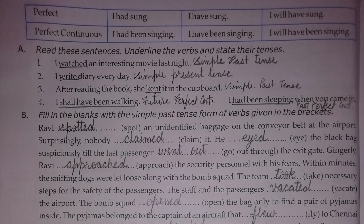Now come to the exercise: read these sentences, underline the verbs, and state their tense. Tense is the topic — you have to tell what kind of tense each sentence belongs to. For example, simple past tense will go in the second; simple present tense will go in the third. If 'shall have been walking' is given, then since it has will/shall, plus have for perfect, plus been, plus V1 plus ing for continuous — it means future perfect continuous tense. Similarly, 'had been sleeping' shows past perfect continuous tense.